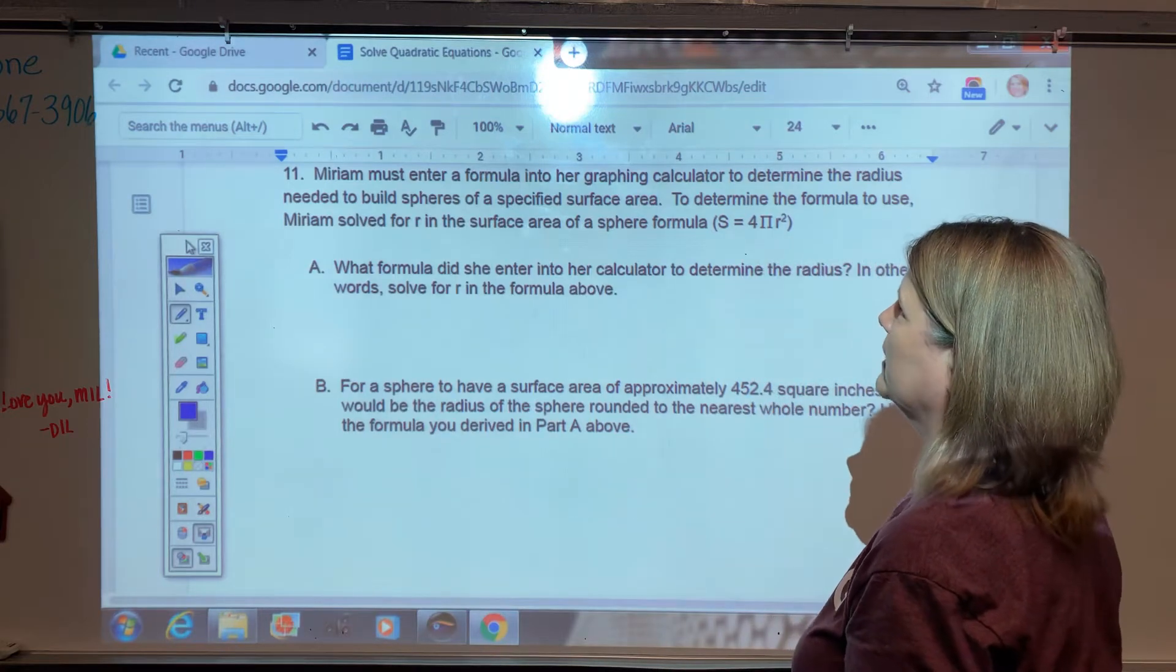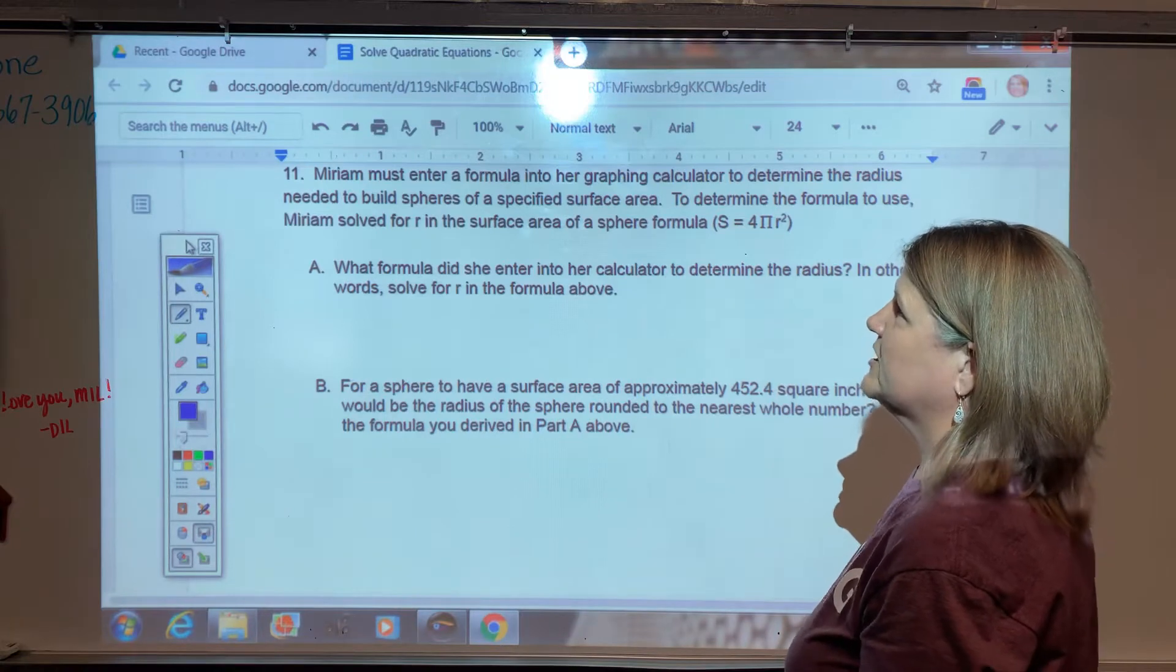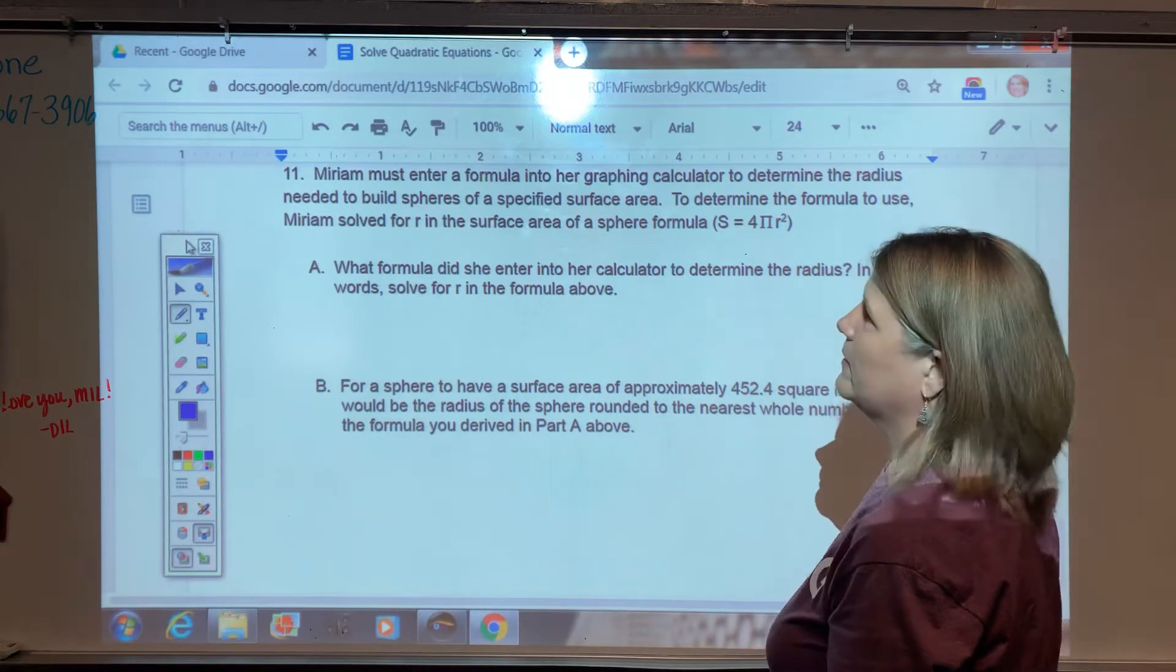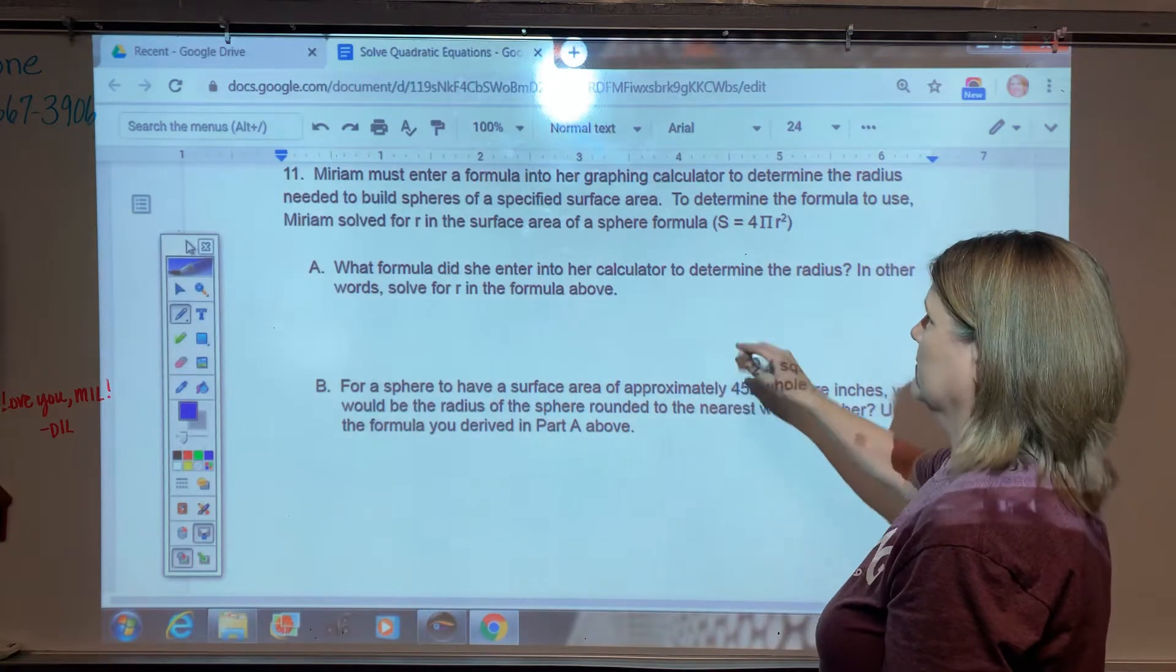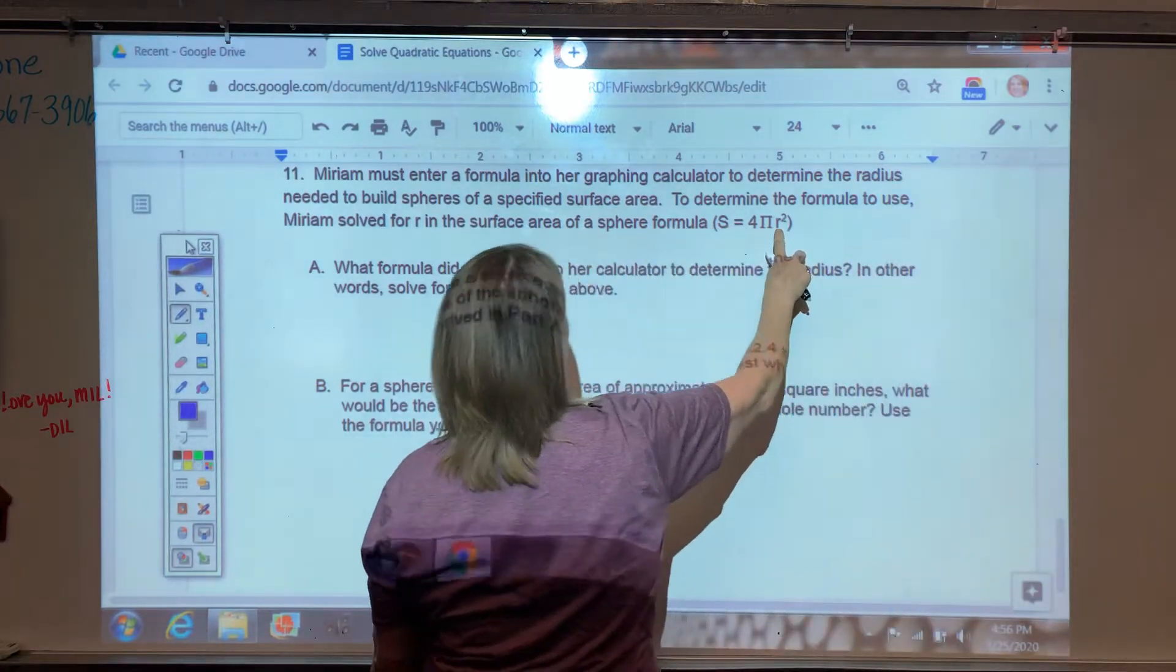A and B part. Miriam must enter a formula into a graphing calculator to determine the radius needed to build spheres of a specific surface area. To determine the formula to use, Miriam solved for R in the surface area of the sphere formula. So you're provided with the formula there, and just simply asked to solve for R.